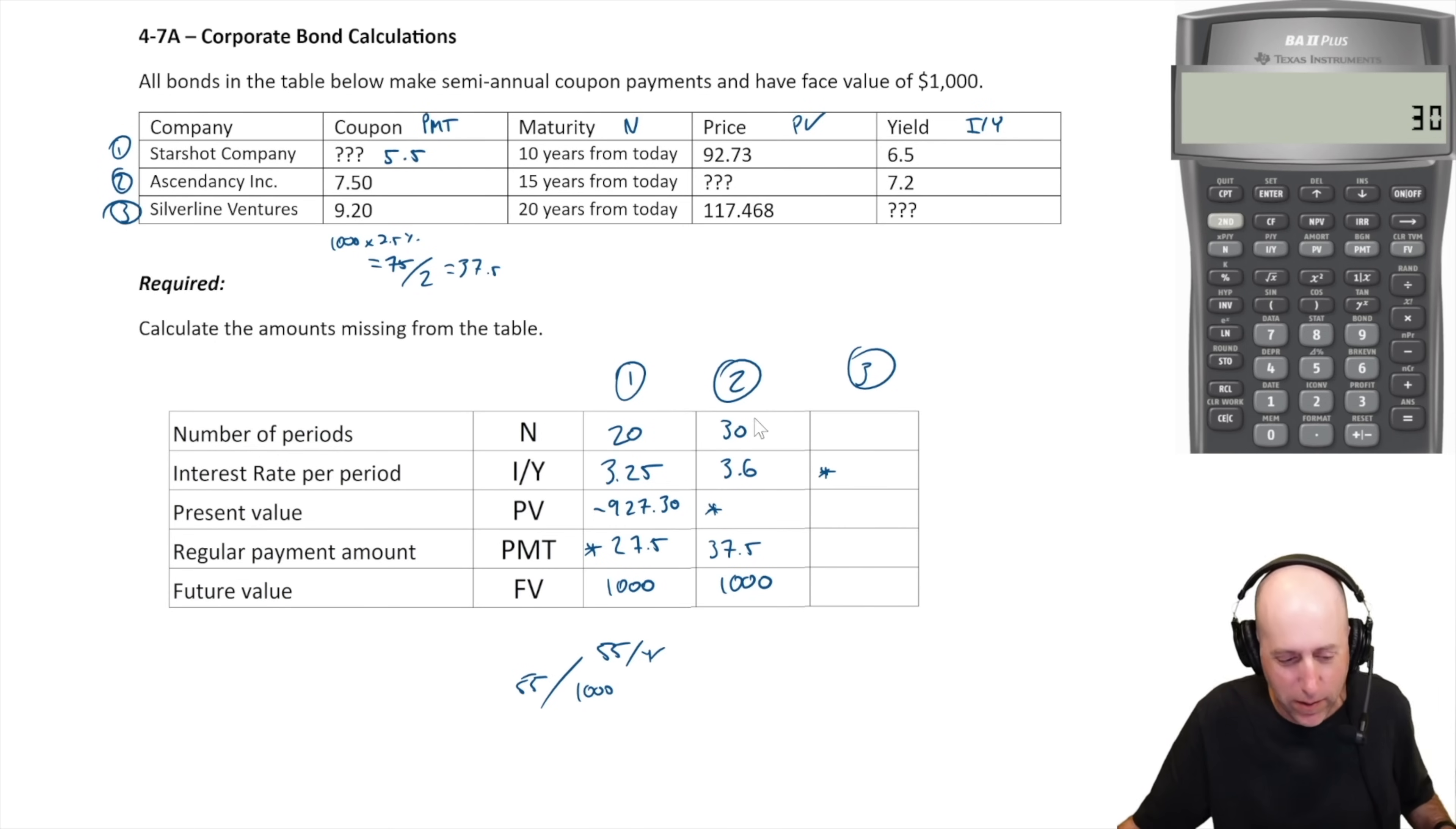30 goes in as N, 3.6 goes in as I/Y, we don't know our PV, $37.50 goes in as the PMT, $1000 goes in as FV. And then we compute PV: $1,027.25. It shows up as a negative number here because that's a negative cash flow. I'll switch it back to a positive number.